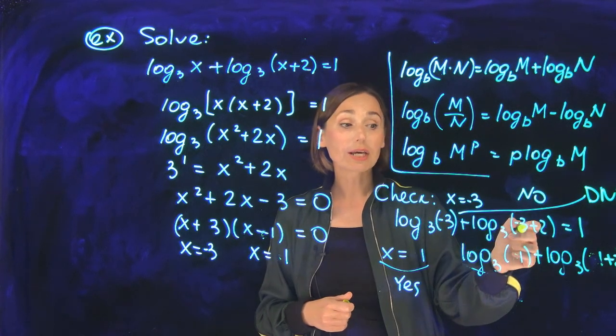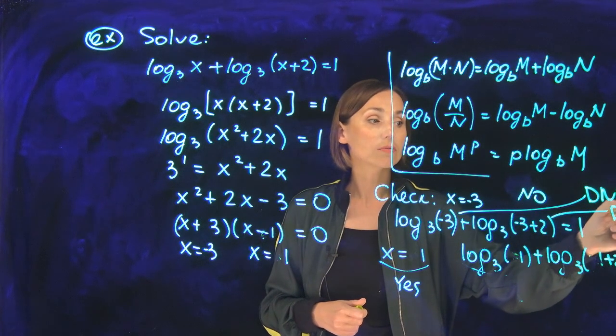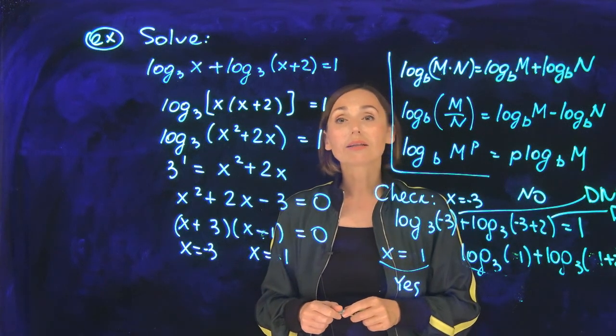Log base 3 of (-3 + 2), which is -1, also does not exist because the argument must be positive. So x = -3 cannot be a solution.